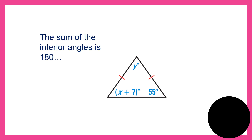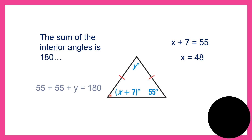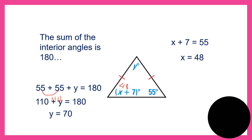The sum of interior angles is 180. We have x plus 7 equals 55, so x equals 48, because 55 minus 7 is 48. Since we have two 55-degree angles here, that gives us 110 degrees. Then 110 plus y equals 180, therefore y equals 70.